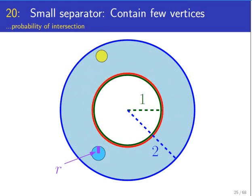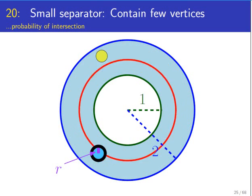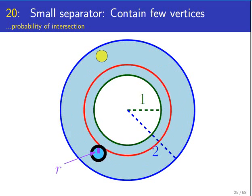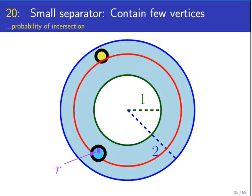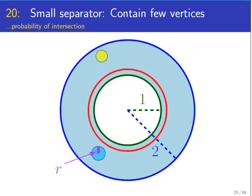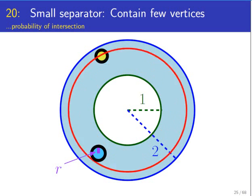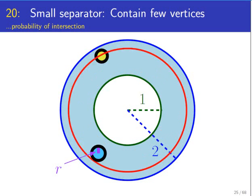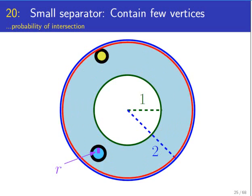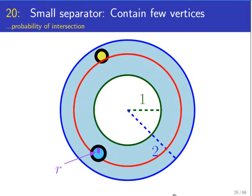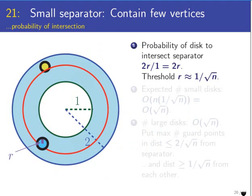The more interesting question is why does this separator have few vertices? The idea is to look at the disks in the circle packing and ask what's the probability that they are going to be in the separator. If a disk has radius r, then the radius of the ring has to be in a specific interval of length 2r for the ring to intersect the disk. The disk is in the separator if and only if the ring intersected it.